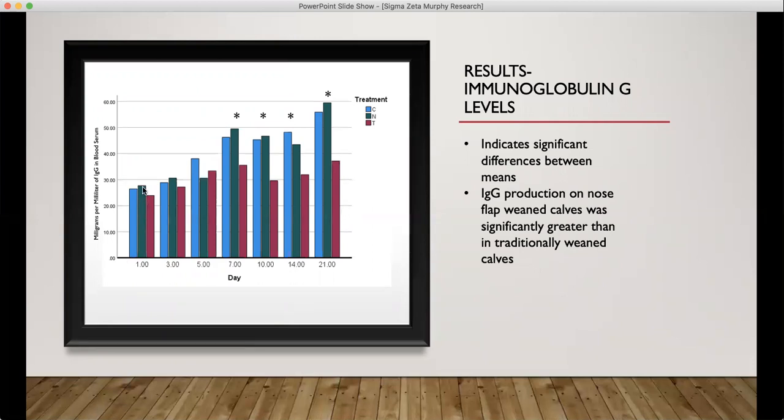Green is the nose flap group, which is calves that were allowed to be with their mothers but had a nose flap placed so they could not nurse from them. And red is the traditionally weaned group, which is calves that are completely separated from their mothers by a pipe corral.